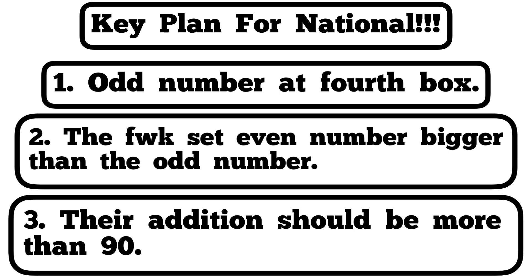After the odd number sets at the fourth box, the following week it will also set an even number — we're talking about even numbers like 2, 4, 6, 8, 10. The following week it sets an even number which is bigger than the odd number. Take note: the even number set the following week should be bigger than the odd number. We should also make sure that adding these two keys gives a number that is more than 90. If it gives an amount less than 90, the key hasn't set. So what we do is subtract the smaller number from the bigger number to get another number.